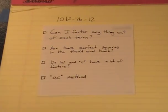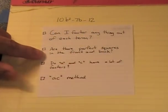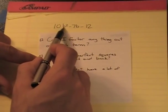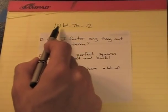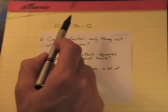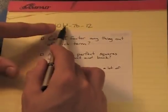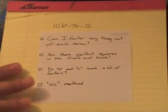So the first question on my checklist says, can I factor anything out of each term? I'm going to look here and it's got 10b squared minus 7b minus 12. And is there anything that divides into each of these numbers? And 7 is prime so right away you can say no. So nothing to factor out, no letters will factor out. So we're good here. We're going to check that on the checklist.